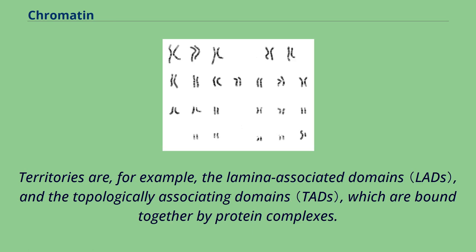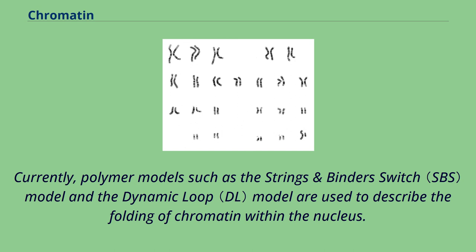Territories are, for example, the lamina-associated domains and the topologically associating domains, which are bound together by protein complexes. Currently, polymer models such as the strings and binder switch model and the dynamic loop model are used to describe the folding of chromatin within the nucleus.